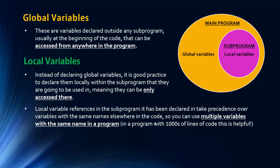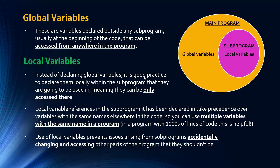On a small scale this isn't too difficult to manage, but in a massive program, having to think of unique variable names gets stretched. Another reason local variables are preferable is they prevent issues arising when a subprogram accidentally changes a global variable that other subprograms depend on — a change that would have knock-on effects throughout the program. Using local variables and passing data via parameters prevents this from happening.